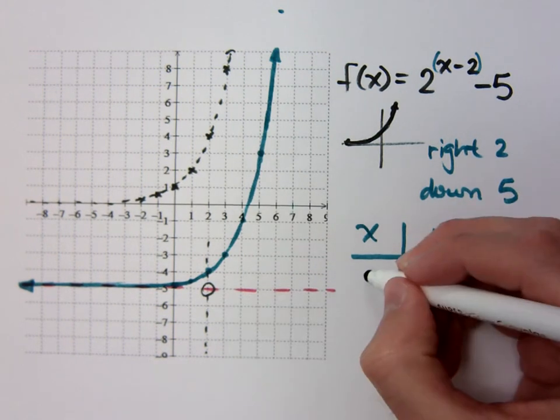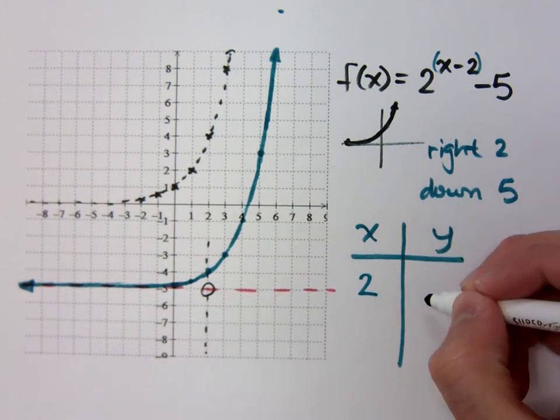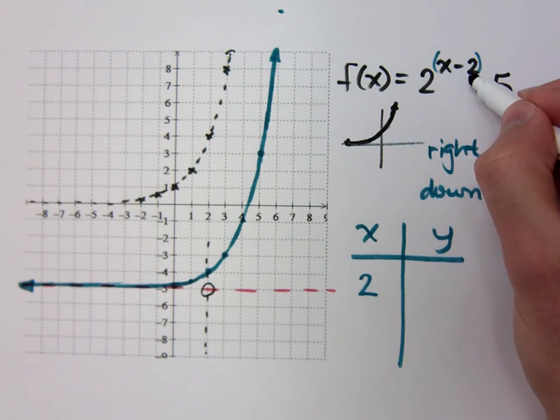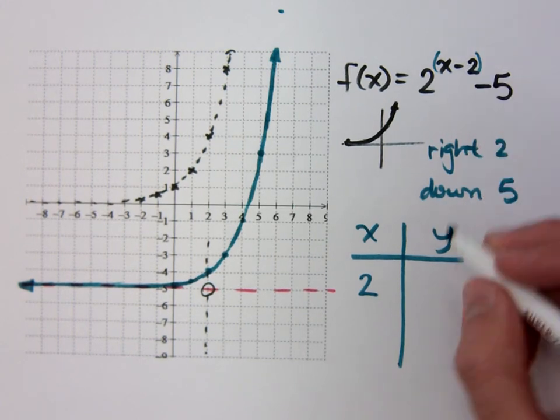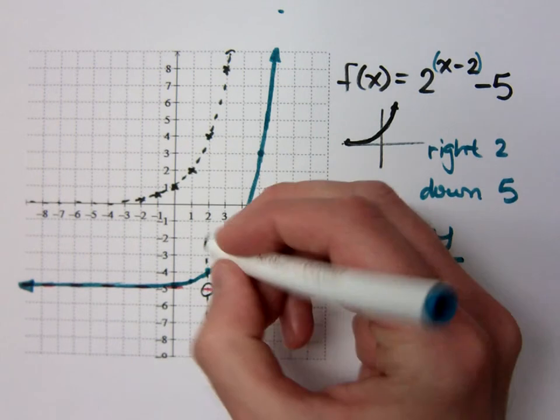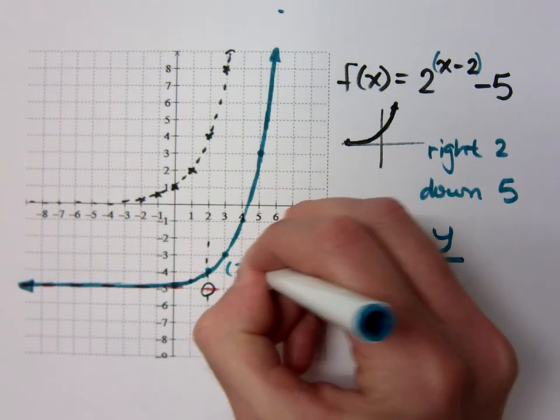So if I were to plug in x equals 2, 2 minus 2 is 0. 2 to the 0 is 1. 1 minus 5 is negative 4. And you see I have the coordinates there of 2, negative 4.